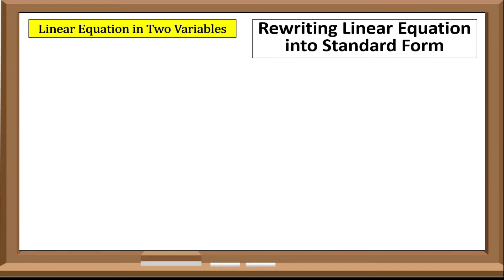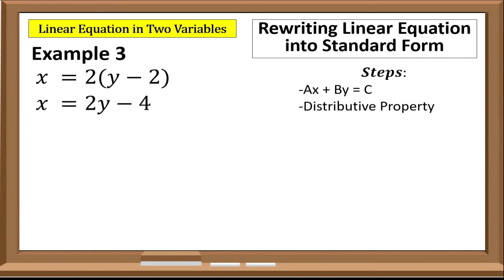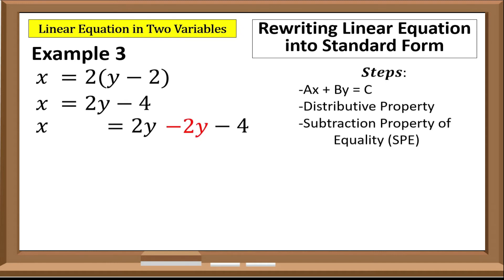Last example: x equals 2 times the quantity of y minus 2. Our goal is to arrange this into standard form, where variables x and y are on the left side and the constant is on the right side. First, we simplify using the Distributive Property: x equals 2y minus 4. Then, to transfer 2y to the left side, we apply the Subtraction Property of Equality and subtract 2y from both sides.